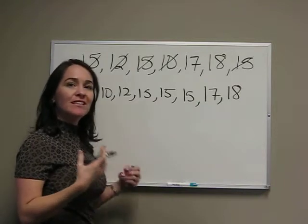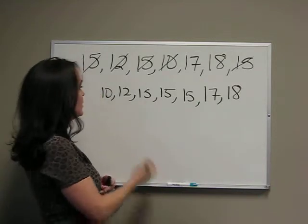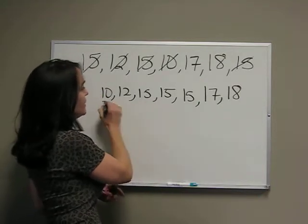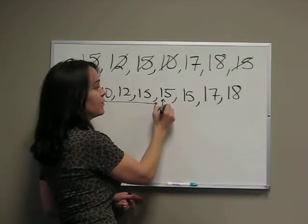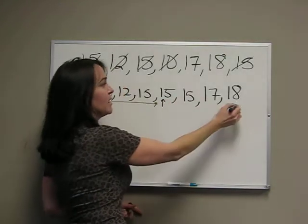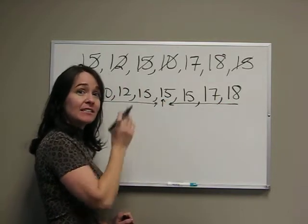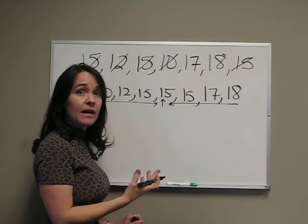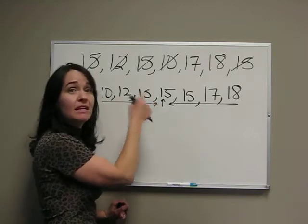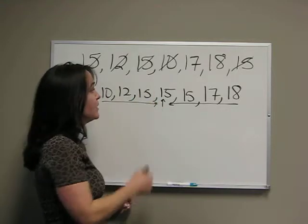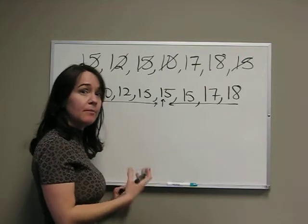Now we just need the middle of these numbers. Well, I can see that this is my fourth number coming up, and this is my fourth number coming down. Since there are exactly seven, an odd number of data points, then it's going to be the exact middle one. So 15 is our median number.